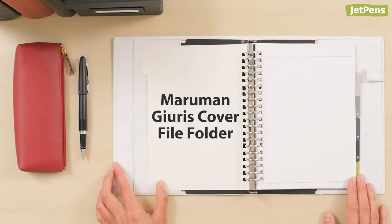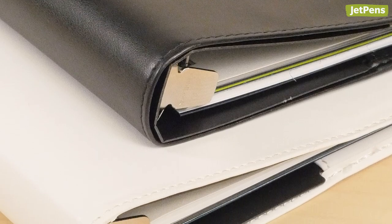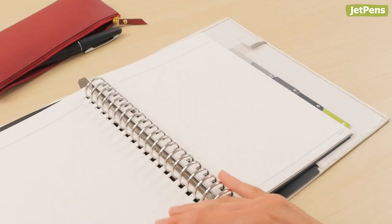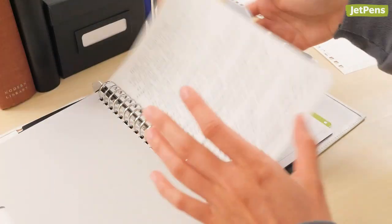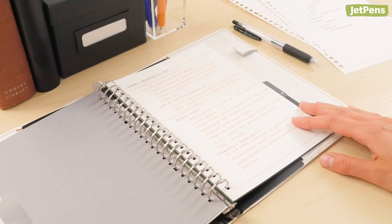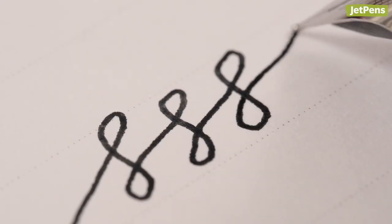The Maruman Juris adds a touch of sophistication to note-taking or studying. It has a luxurious leatherette cover and comes with 20 sheets of juris-lined paper. This paper is the highest quality produced by Maruman. It is highly resistant to bleed-through and feathering, which is perfect for taking notes with a fountain pen.